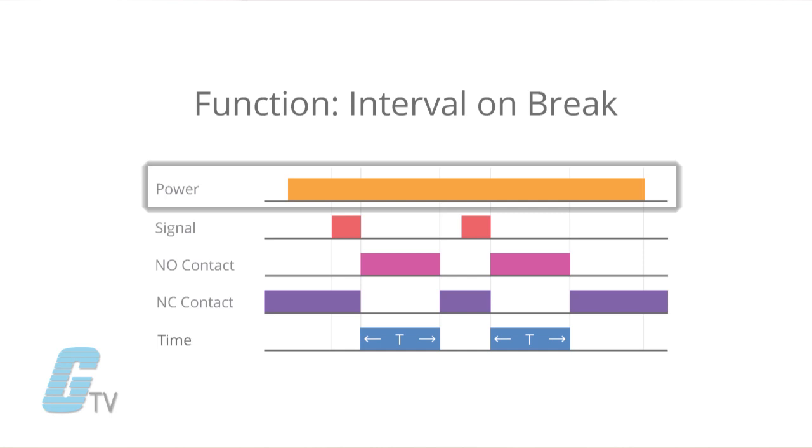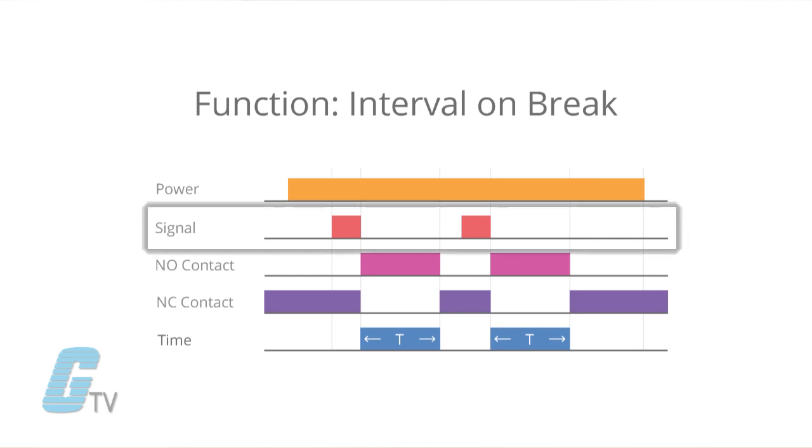The power is usually applied continuously in a timing diagram. The next line may have an S or the word signal. This is found only on signal start timers where an input signal is required to initiate the timing function.